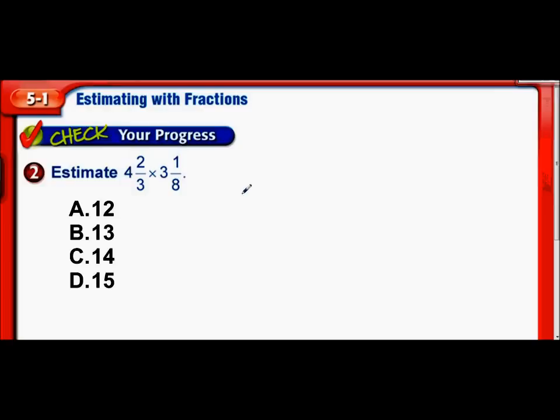Now we have 4 and 2 thirds times 3 and 1 eighth. We ask ourselves, is 4 and 2 thirds closer to 4 or 5? 2 thirds is more than 1 half, so 4 and 2 thirds is really closer to 5. Now 3 and 1 eighth is closer to 3. 1 eighth really is much less than 1 half. 4 eighths would have been exactly 1 half, and at that point we would have rounded up. So we finish off with multiplying 5 by 3, and 5 times 3 is of course 15.